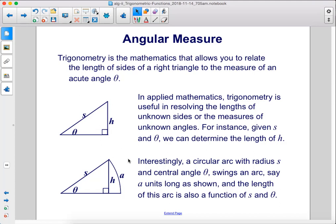Interestingly, a circular arc with radius s and a central angle theta swings an arc, say, a units long as shown, and the length of this arc is also a function of s and theta.